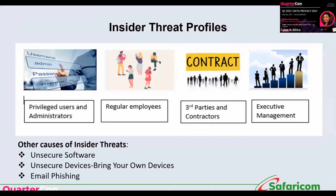Another cause is unsecured devices — BYOD and IoT. How do you monitor the devices your employees, third parties, and contractors bring in and out of the organization? What information is on them and how is it protected? The most notorious cause is email phishing, which requires continuous awareness so employees can detect phishing signs. You should run phishing campaigns to gauge employees' awareness levels and structure targeted training for those who frequently fall victim.